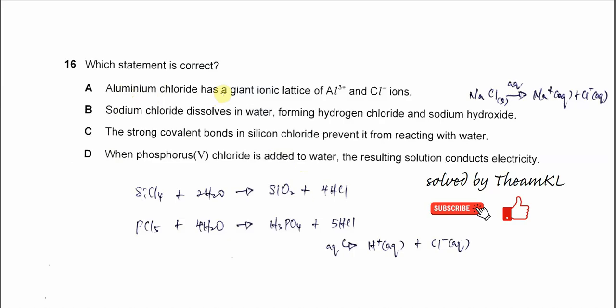Aluminum chloride has a giant ionic lattice of aluminum ion and chloride. So aluminum chloride normally exists as a dimer, Al2Cl6, which is a simple molecular structure.